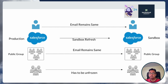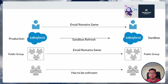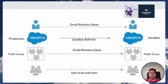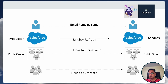As an admin, you don't need to take any action — you don't need to go and remove the dot invalid from their email address or reset their password. They will automatically get access to the newly created or newly refreshed sandbox, and they can use the same production password on the sandbox. This is a very helpful feature for admins and will definitely help their day-to-day life.